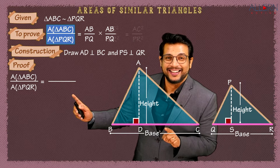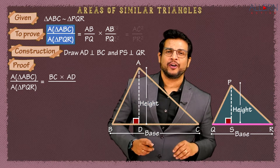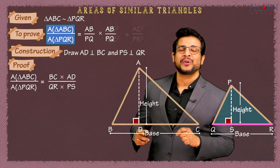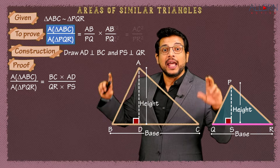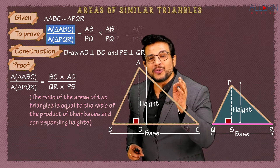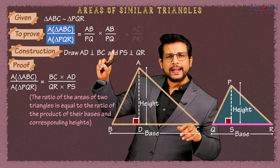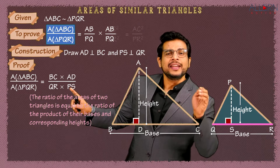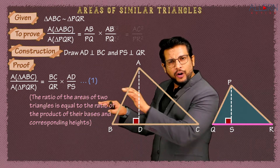The reason for that step is: the ratio of the areas of two triangles is equal to the ratio of the product of their bases and corresponding heights. We can rewrite BC×AD upon QR×PS as (BC/QR) × (AD/PS). Let this be Result 1. Now compare with what we want: we want (AB/PQ) × (AB/PQ), but we have (BC/QR) × (AD/PS).